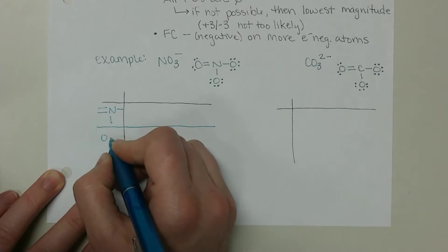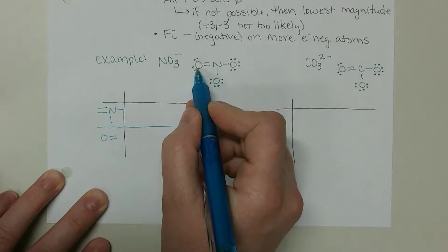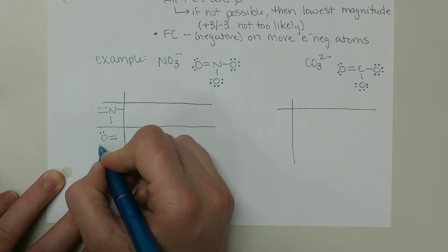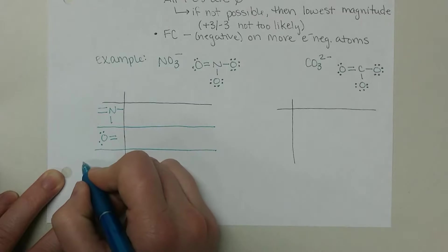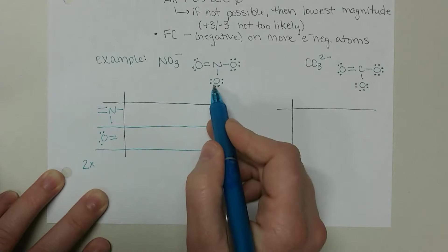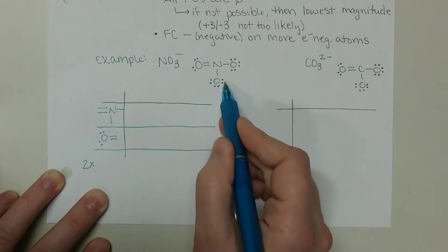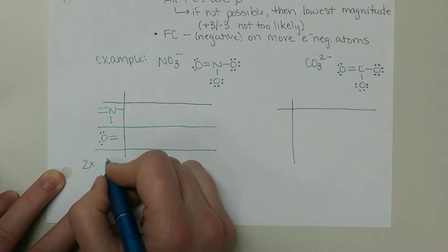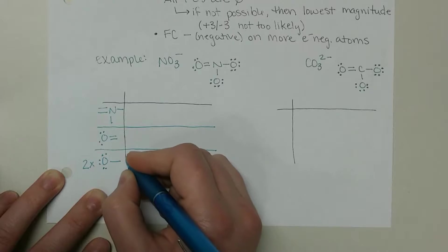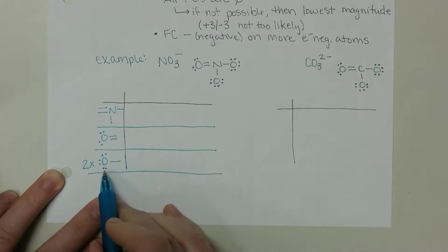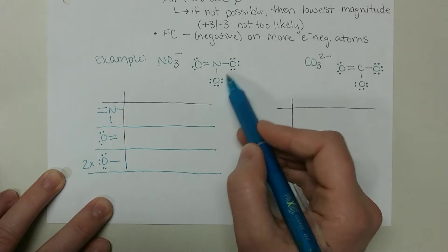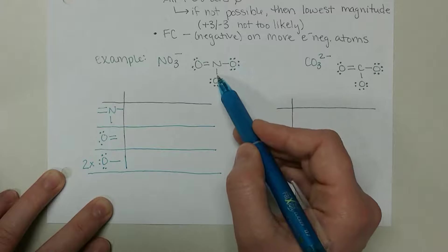Then we have two different types of oxygens. We have an oxygen with a double bond, that oxygen there. And then we have two oxygens that have six lone pairs and a single bond. Because their bonding is identical, we can just calculate them once and know that that formal charge, if there is one, will be for both of these oxygen atoms.